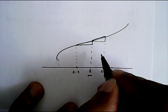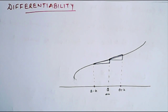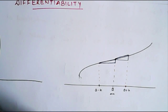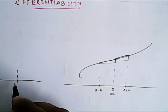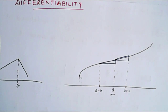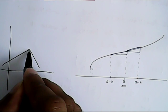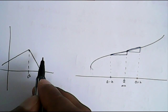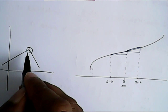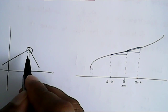The concept we will understand here: when we say whether a function is differentiable at that point or not, it means we are asking whether the function has a corner at this point. If the function has something like a corner, it means the slope just before this point and just after this point will not be equal. So if the slope has a sudden change, it means the function is not differentiable at this point.